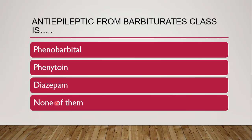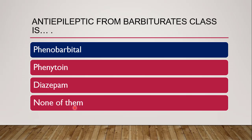Next question: the anti-epileptic from the barbiturate class is — phenobarbital, phenytoin, diazepam, or none of them? The correct answer is phenobarbital, also known as phenobarbitone, which belongs to the barbituric acid derivative or barbiturate class.